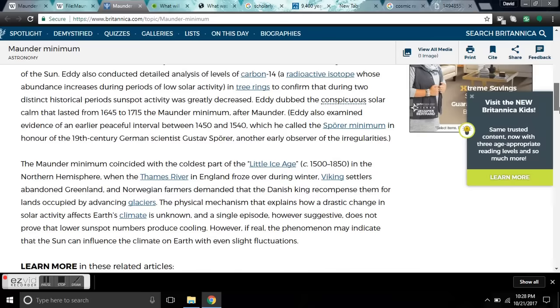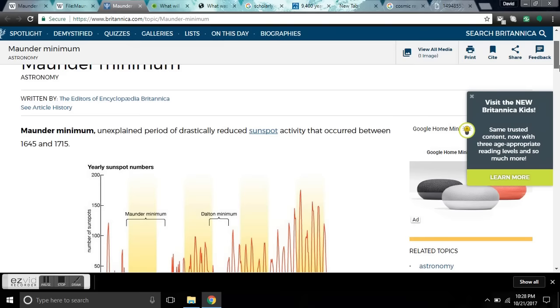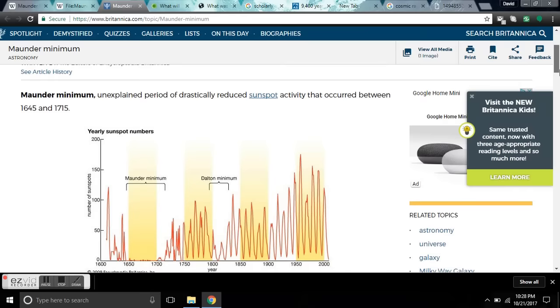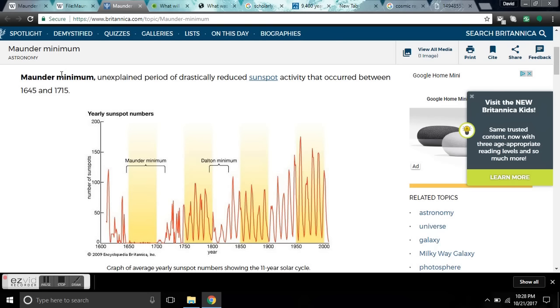Now, I'll leave you links to everything here. The Maunder Minimum, according to astronomy, an unexplained period of drastically reduced sunspot activity that occurred between 1645 and 1715. Well, we now have kind of a grasp on the explanation of these minimums.